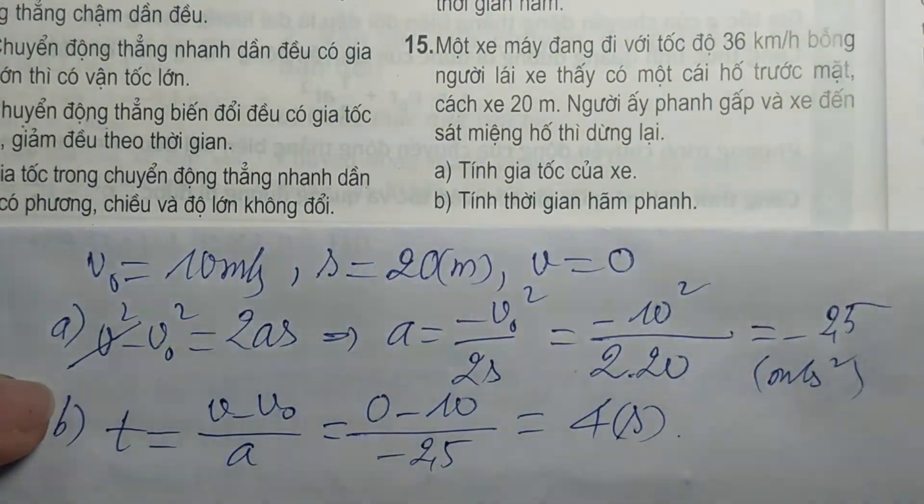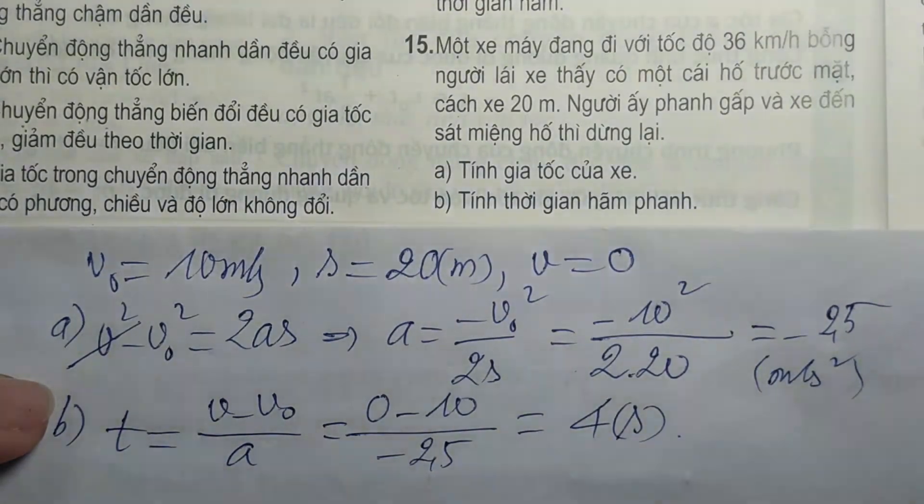Như vậy các con đã giải các bài tập từ câu số 9 đến câu số 15. Câu số 15 cho số đẹp nhất. Hôm nay thầy dừng ở đây, vì thầy còn xây dựng video cho lớp 11 và lớp 12 trong buổi chiều hôm nay. Ngày mai, thứ 4 hoặc thứ 5, thầy sẽ gửi tiếp video về bài tập chuyển động thẳng biến đổi điều. Hôm nay là khởi động với các câu cơ bản, hôm sau sẽ làm bài khó hơn. Thầy xin chào các con.